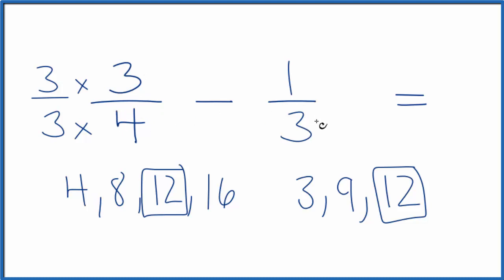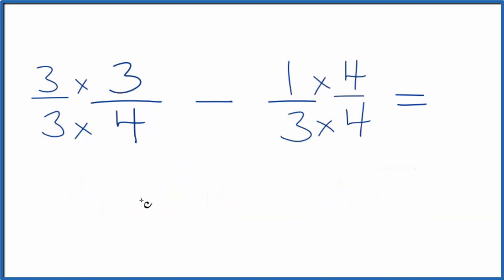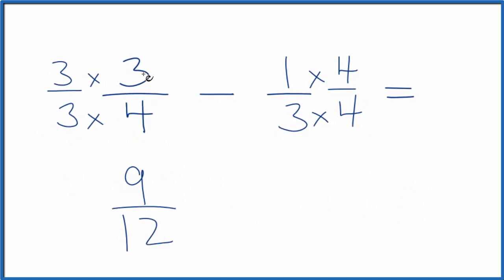Over here, if I multiply 3 times 4, that'll give me 12. Let's multiply the top as well. And now 3 times 3 is 9, 3 times 4 is 12. If you divide 3 by 4 or 9 by 12, you'll get the same number.